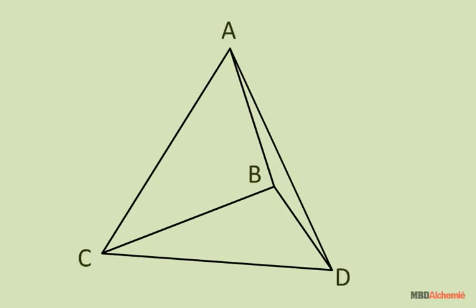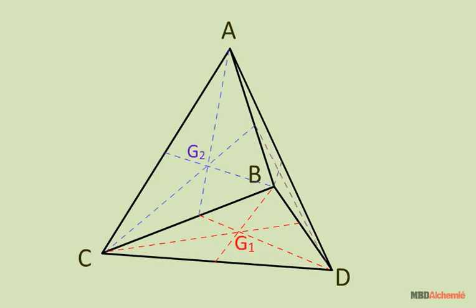Let ABCD be any given tetrahedron. Find all the centroid of triangular faces, say G1, G2, G3, and G4.